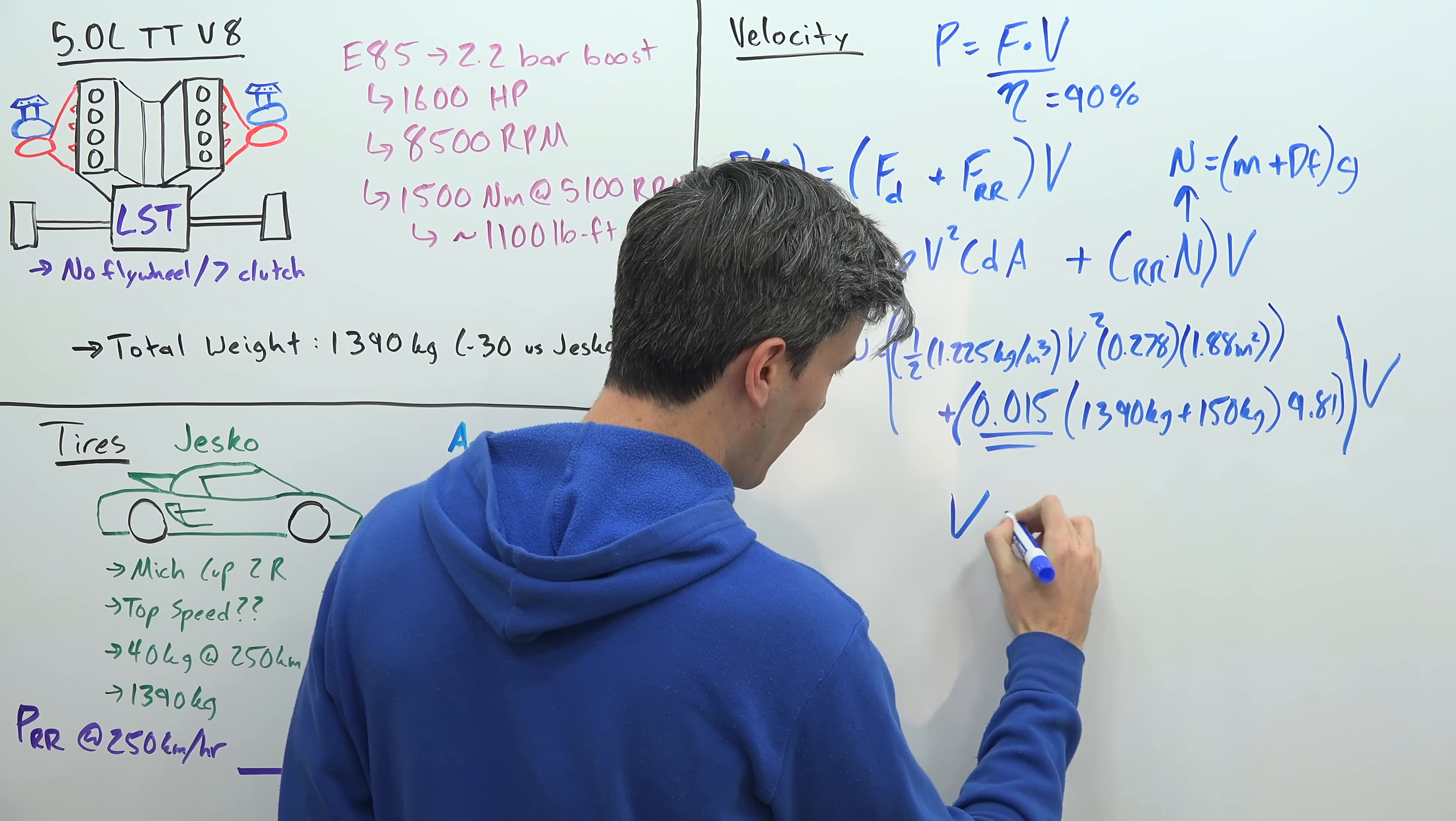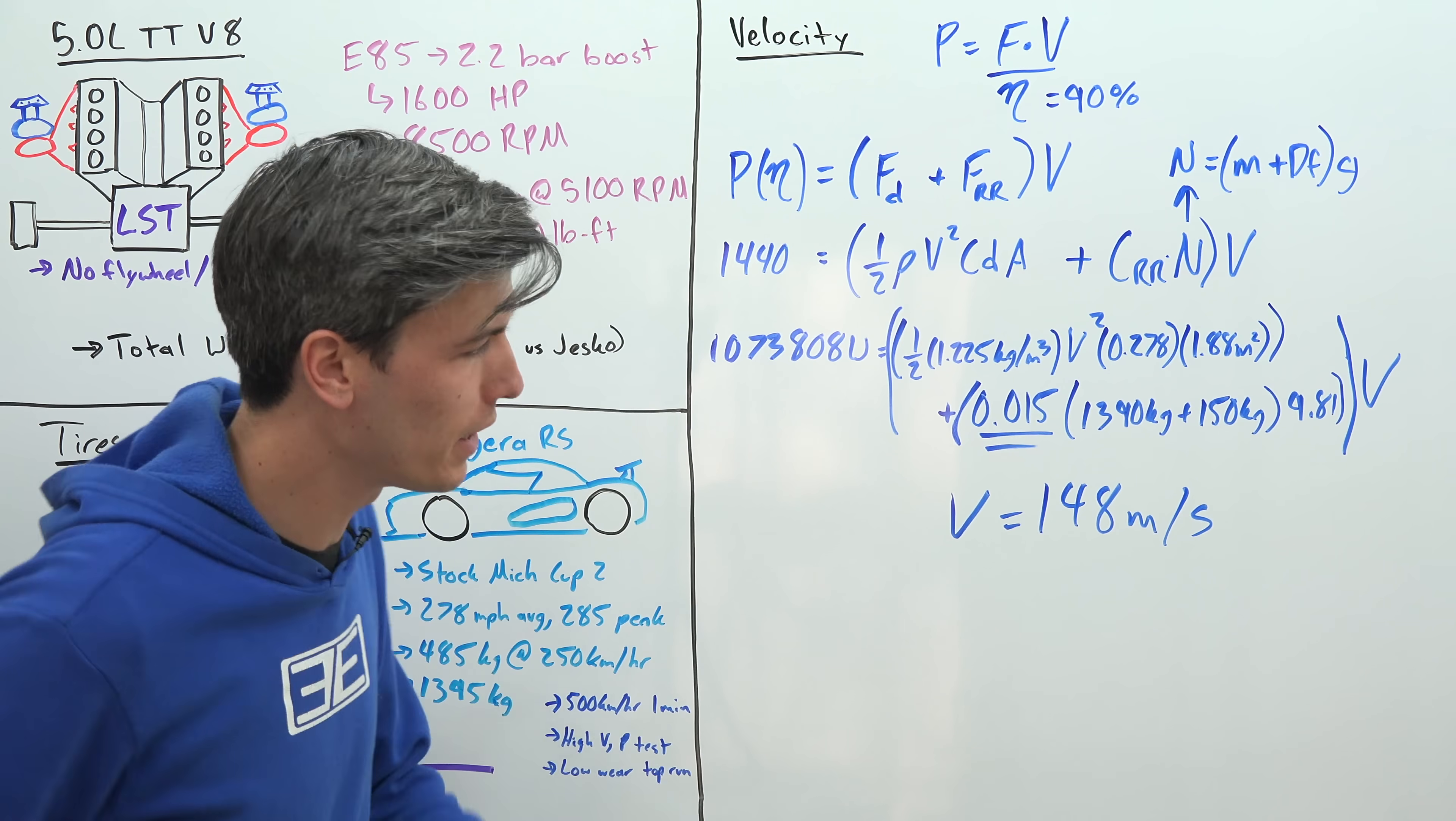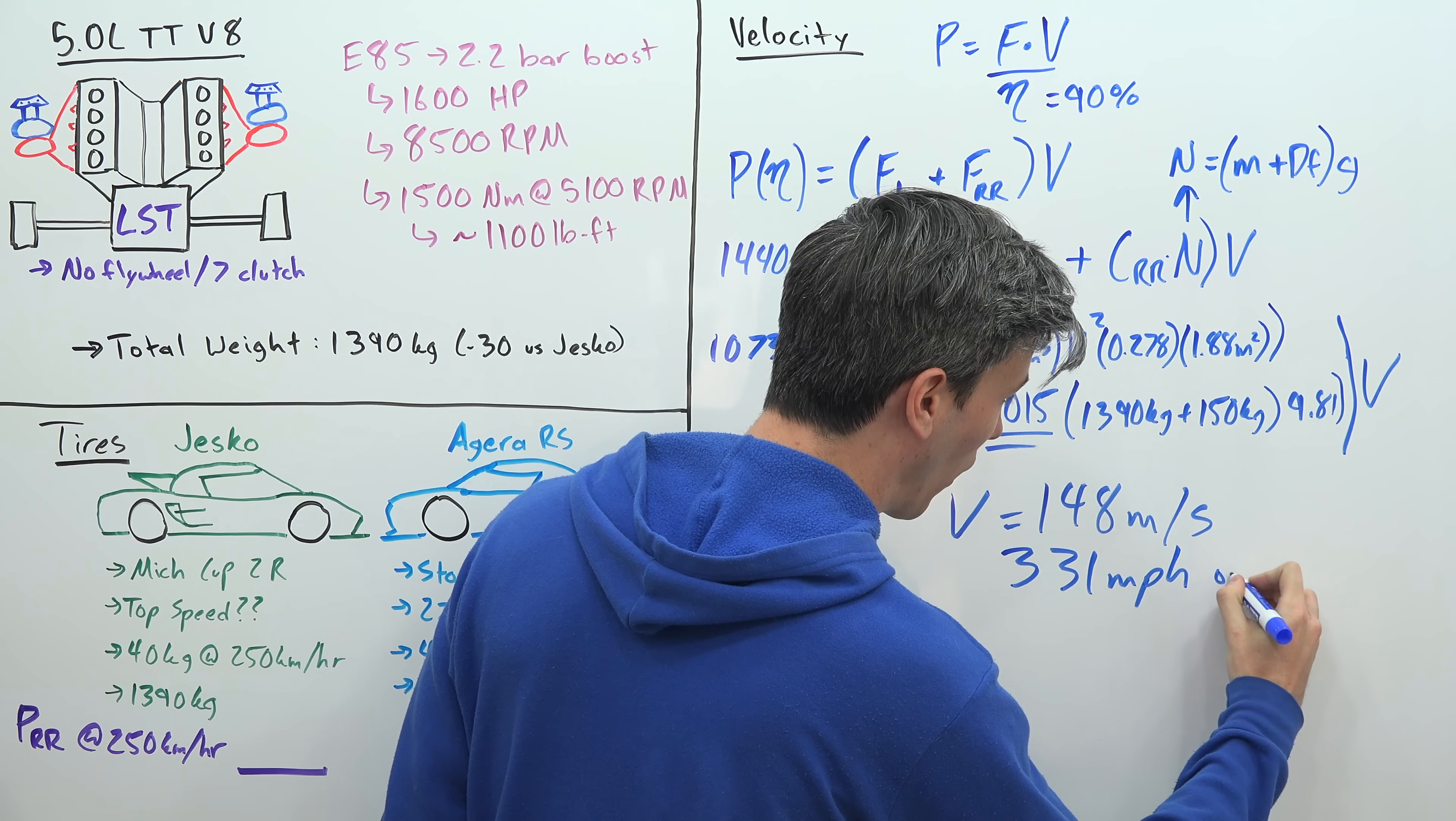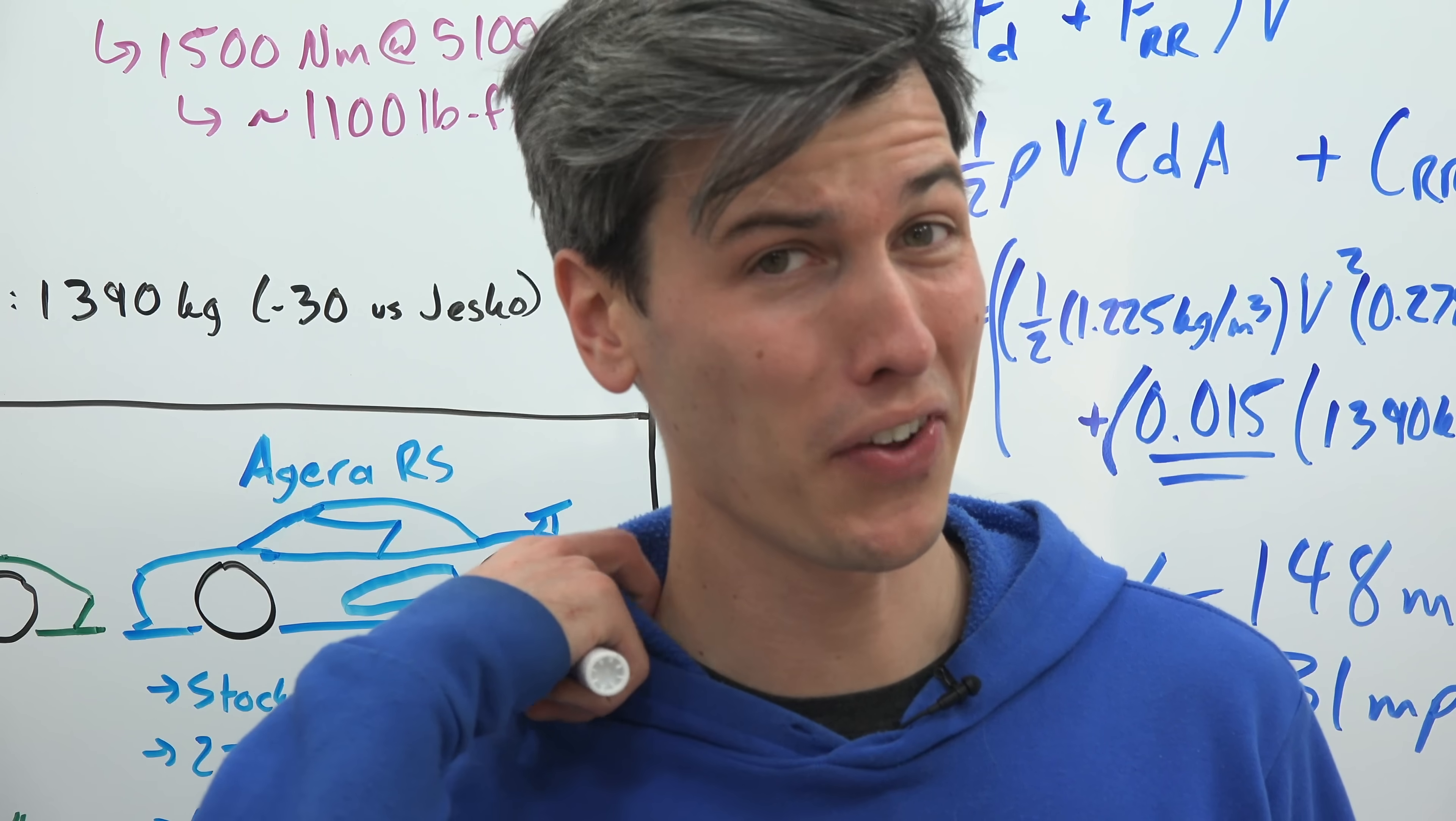So what happens when we solve for V? Drumroll please. Velocity equals 148 meters per second. Now that probably doesn't mean a whole lot to you, so let's convert that: 331 miles per hour, or 533 kilometers per hour. Boom! That's pretty fast.